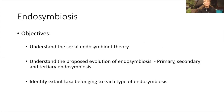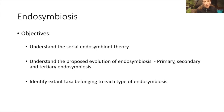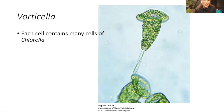Today I want you to understand the serial endosymbiotic theory and understand the difference between primary, secondary, and tertiary endosymbiosis. The third point is identifying extant taxa belonging to each type. That is something we're going to work on throughout the whole semester, so I'm not that concerned that you get that nailed right now. I'm not really even going to talk about names that much today, except for this one: Vorticella.